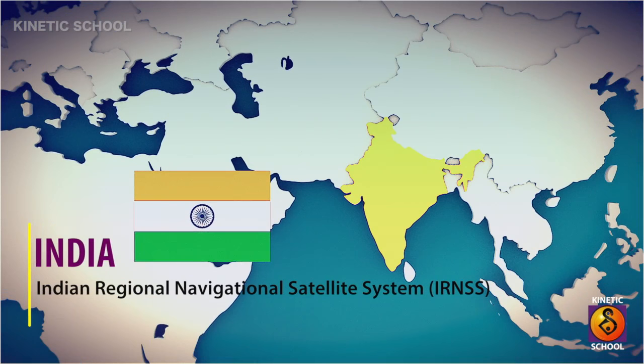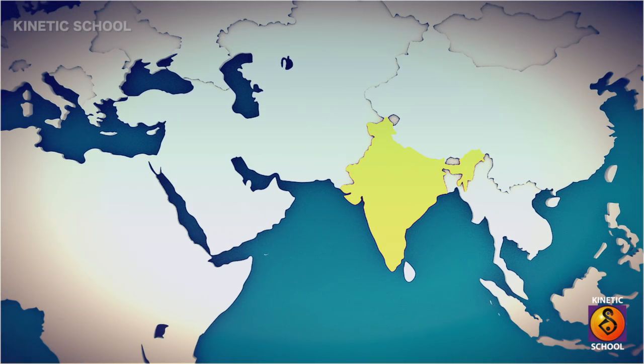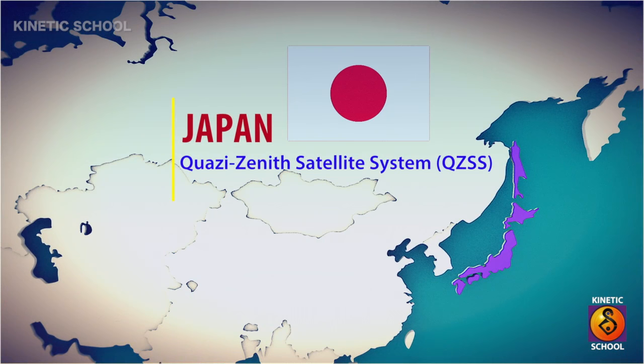There is the Indian Regional Navigation Satellite System, or IRNSS, in India. Lastly, the Quasi-Zenith Satellite System, or QZSS, is Japan's satellite system, which is similar to GPS satellites with some slight variations.